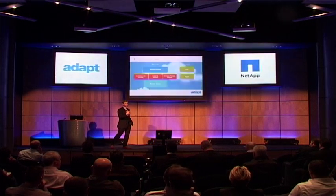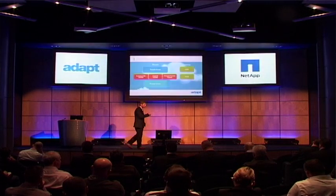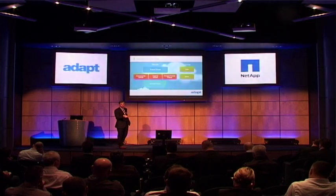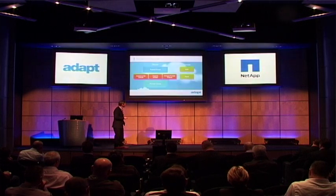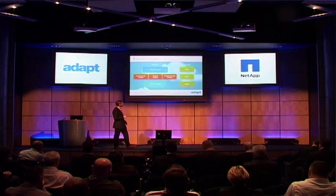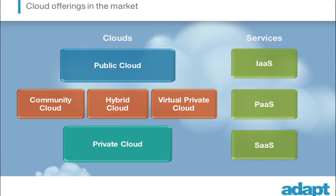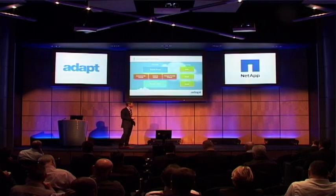Next up the stack, platform as a service — this is the one which causes most confusion. Platform as a service gives you basically an application stack for you to develop certain applications on, but it doesn't give you access to the underlying infrastructure typically. And then the one where I think we're mostly all familiar with: software as a service. With software as a service, you take that service end-to-end, you pay a subscription, you've got no access to the underlying application infrastructure, storage, or switches at all.